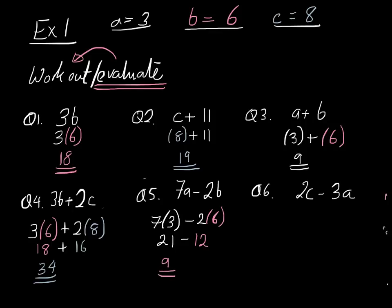And the last example, 2c subtract 3a. Well, we're going to substitute in the c and the a. 2 multiplied by 8, so we're going to have 2 bracket 8, subtract 3 bracket 3. Now 2 multiplied by 8 is 16. So we have 16 here. Subtract 3 multiplied by 3 is equal to 9. And 16 subtract 9 is equal to 7. And there we go.